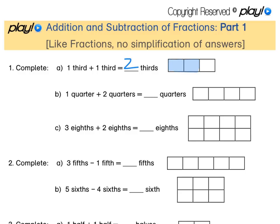For B, 1 quarter plus 2 quarters. So in the diagram, 1 quarter plus another 2 quarters gives us 3 quarters in total.